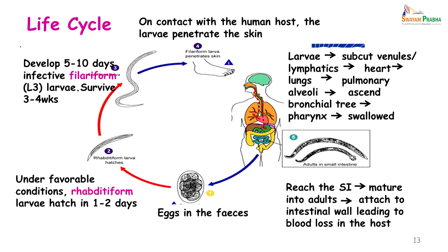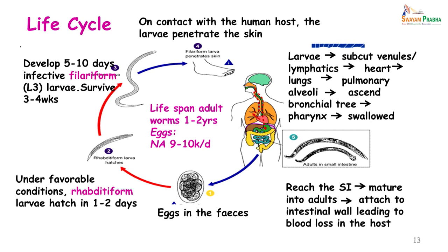The adult worm attaches to the intestinal wall, causing blood loss. The worms attach to one patch, suck blood, secrete an enzyme, and then move off — leaving leakage continuing even after they leave. The lifespan of an adult worm is 1 to 2 years. Necator americanus produces 9,000 to 10,000 eggs per day, while Ankylostoma duodenale produces 25,000 to 30,000 eggs per day.